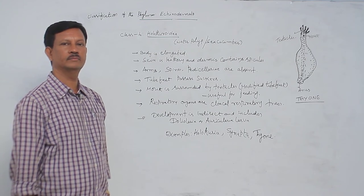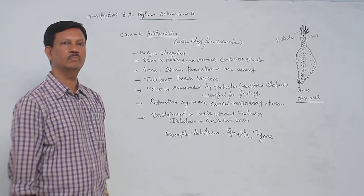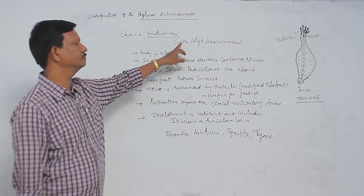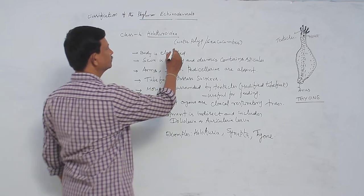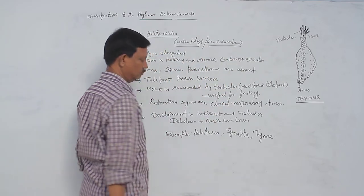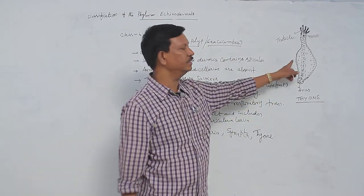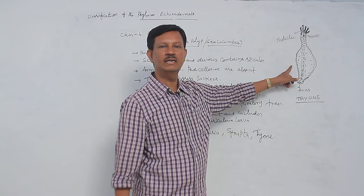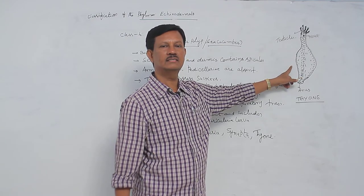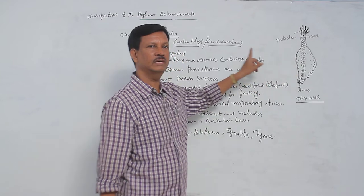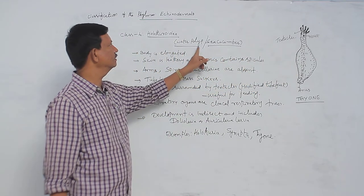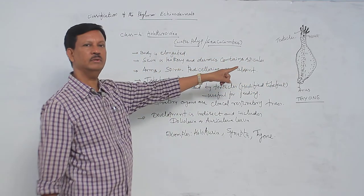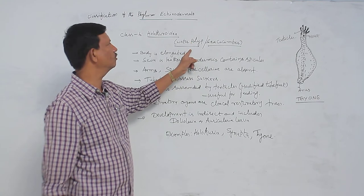Class Holothuroidea, these animals are commonly known as the water polyp or sea cucumbers. The shape of the body resembles a cucumber, hence they are known as sea cucumbers. They are found in water and resemble polyp, so they are also known as water polyp.